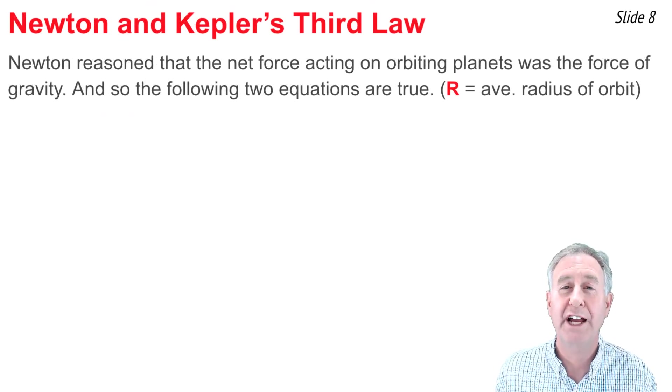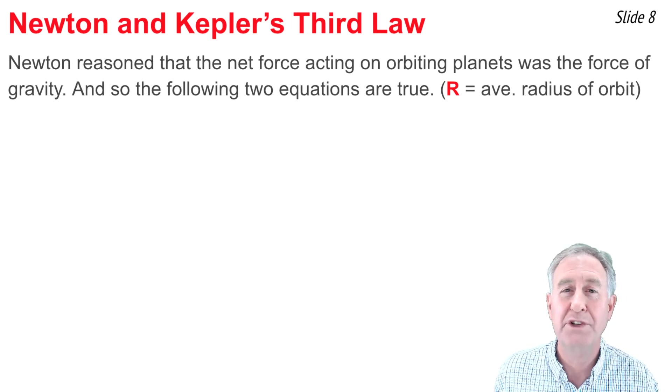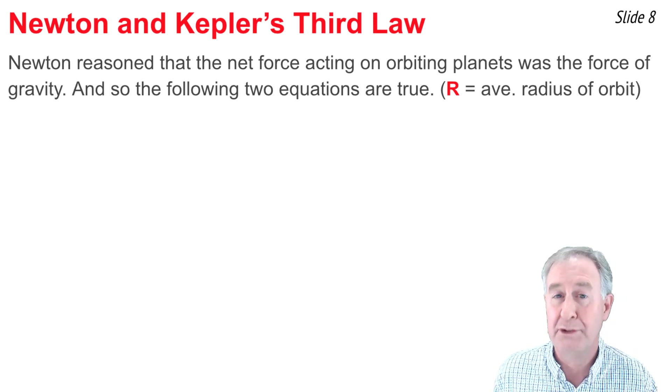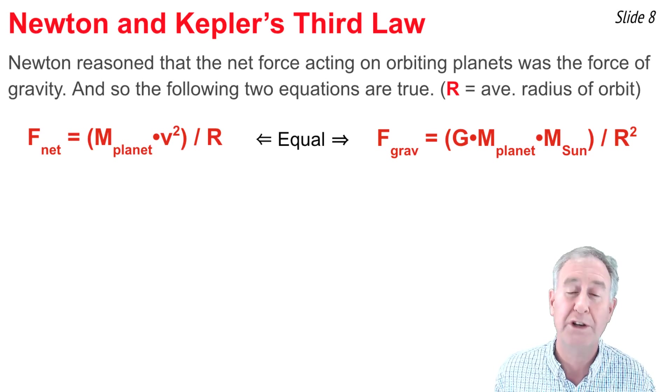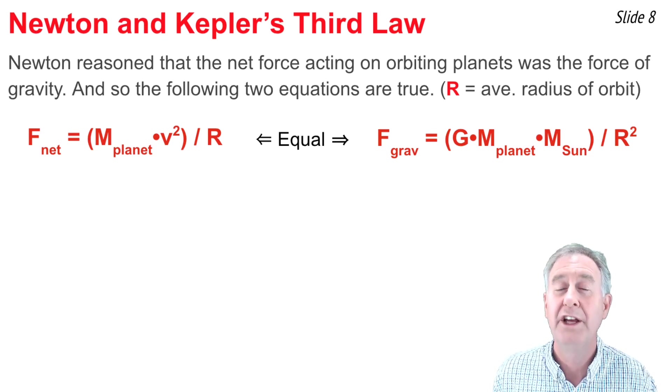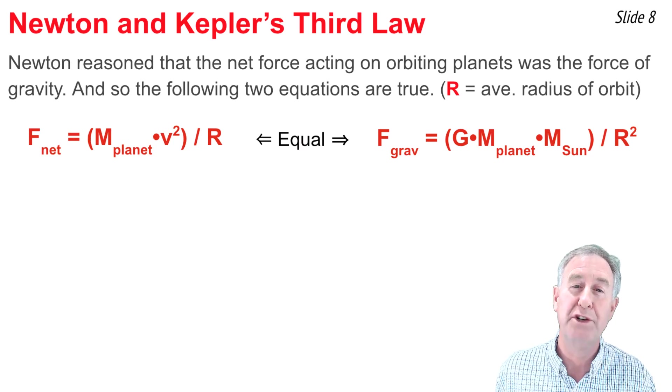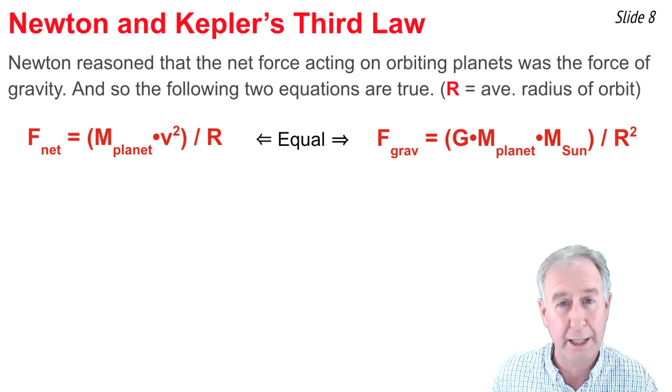Now, nearly a century later, Isaac Newton reasoned that the net force that acts upon an orbiting planet is the force of gravity. And as such, the expression for the net force, mv² / r, can be set equal to the expression for the force of gravity between a planet and Sun.